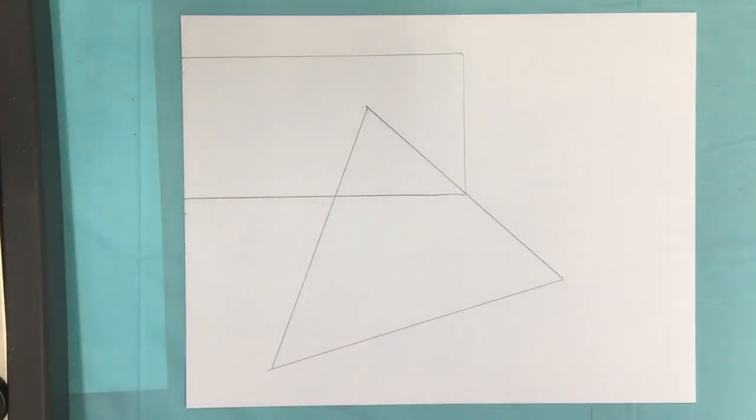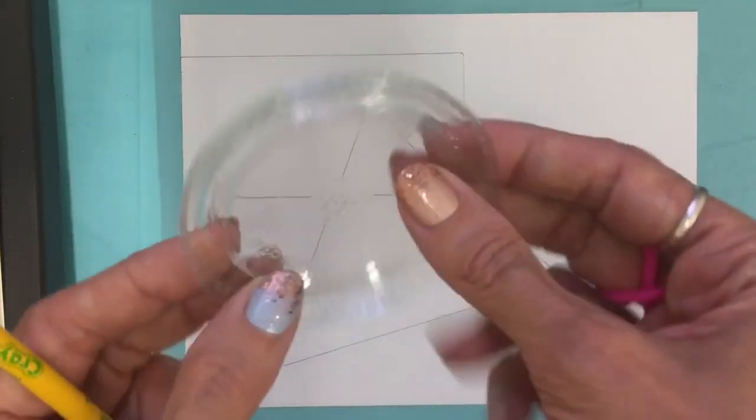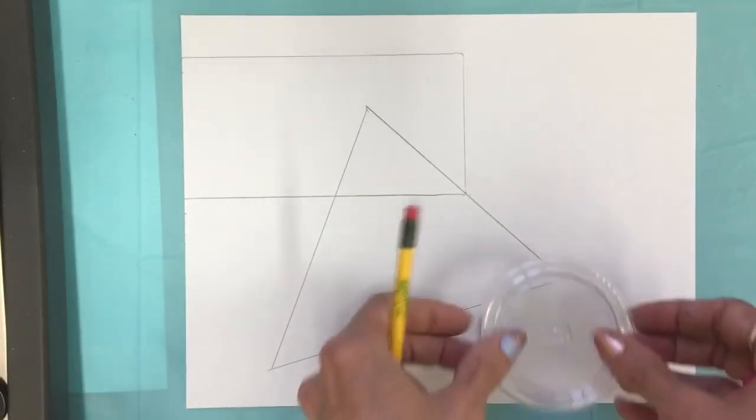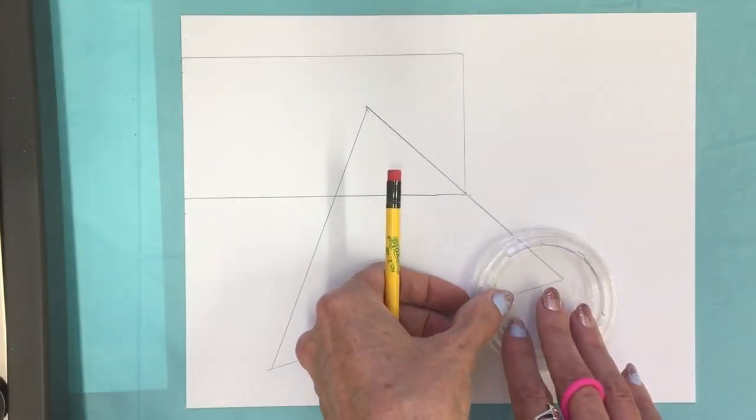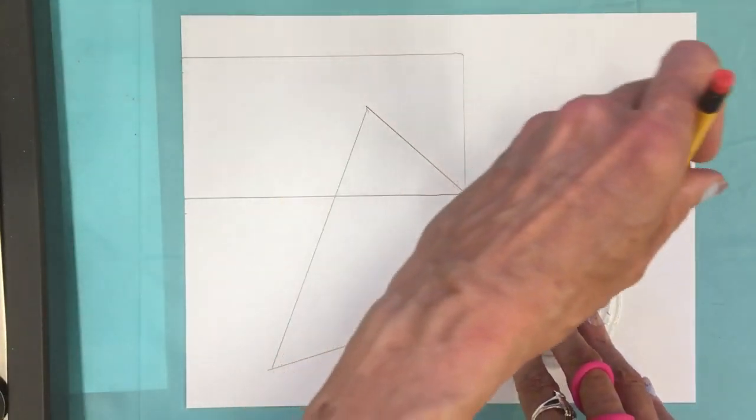So I can keep going. I can find something circular that I could use to trace. Maybe I'll come over here and I'll add a circle.